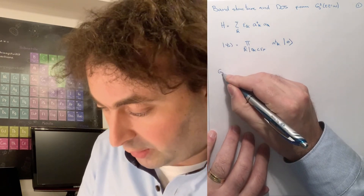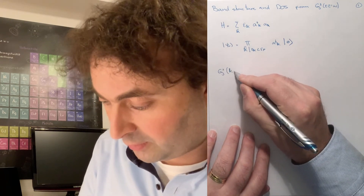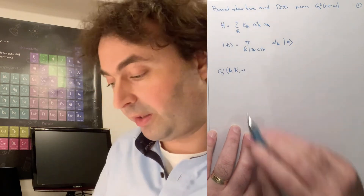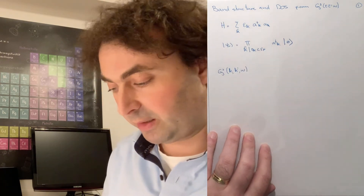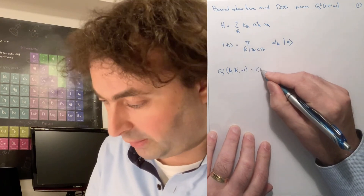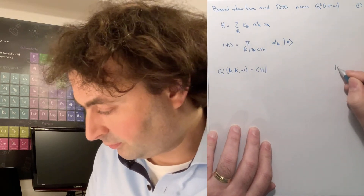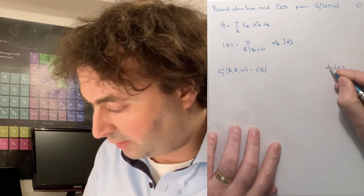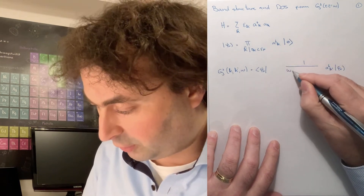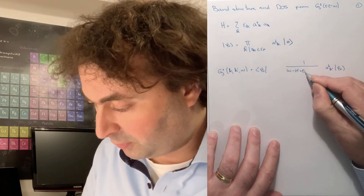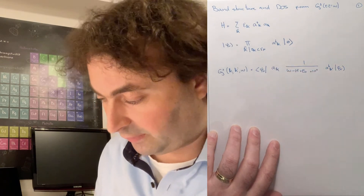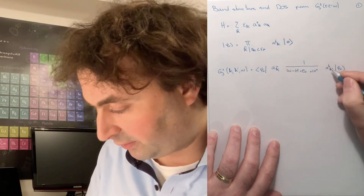Let's have a look at G plus first in momentum space. We create a particle at crystal momentum k prime, we annihilate it with crystal momentum k, and we do this at energy omega. So we have our ground state wave function, we create the particle at k prime, then we have our Green's operator: omega minus the Hamiltonian, plus the ground state energy, plus i0+.